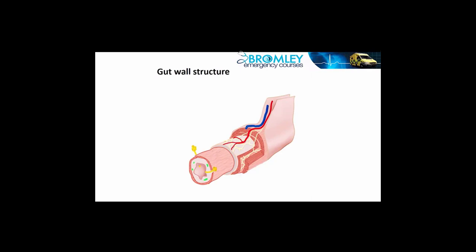We're going to start by looking at the gut wall structure in a generic way, using the same structure of four layers described throughout the gut, even though the detail at each different part — the esophagus, stomach, small intestine, large intestine, etc. — varies.